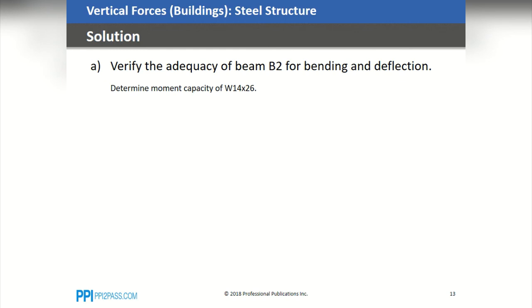To determine the moment capacity, we need to grab some beam section properties from AISC manual table 1-1. Here's what we got for W14 by 26.